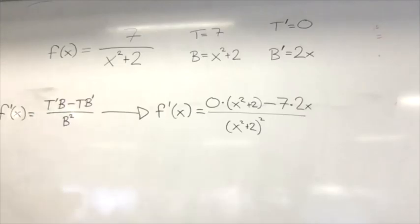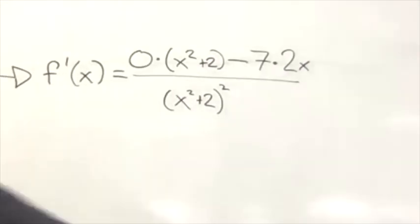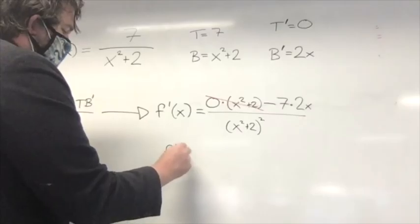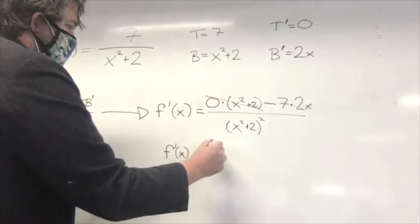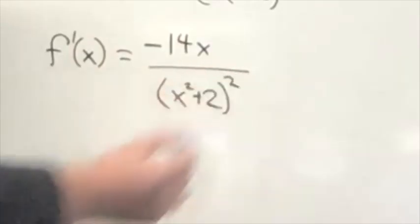So that's the first derivative using quotient rule. Do you agree? Do you see anything we could do that would make this a little bit cleaner or nicer? So at the end of the day, we're left with f prime of x is equal to negative 14x over x squared plus 2 squared.